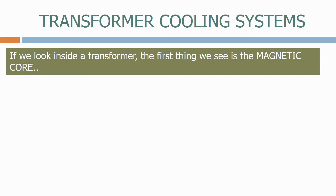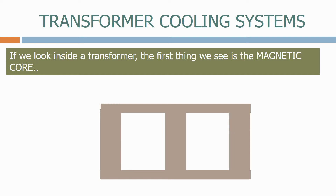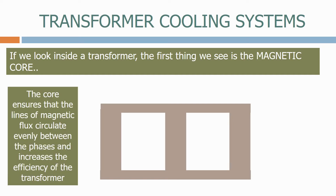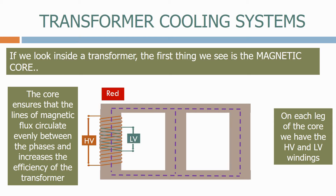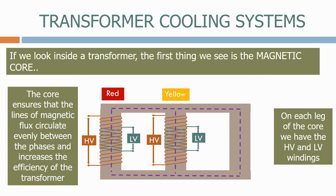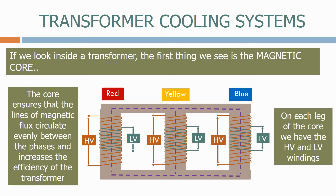If we look inside a transformer, the first thing we see is the magnetic core. The core ensures that the lines of magnetic flux circulate evenly between the phases and increases the efficiency of the transformer. On each leg of the core we have the HV and LV windings. We have the red phase, yellow phase and blue phase.